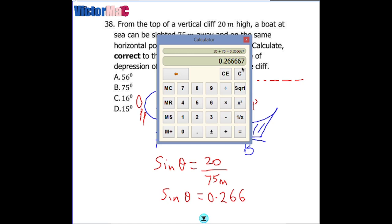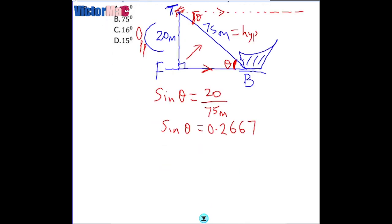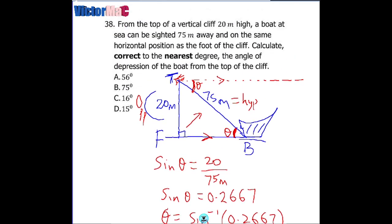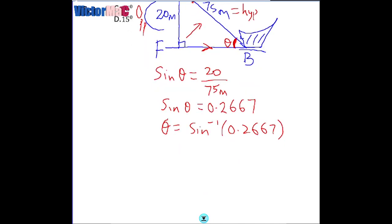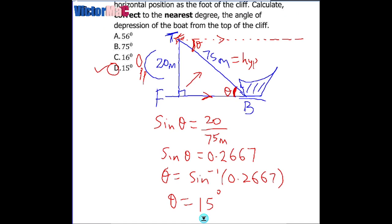Dividing 20 by 75 gives approximately 0.2667. Taking the arcsine of both sides, using a calculator or trig tables, the angle theta is approximately 15 degrees. That's option D, 15 degrees.